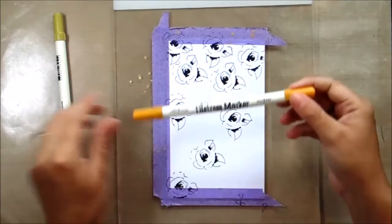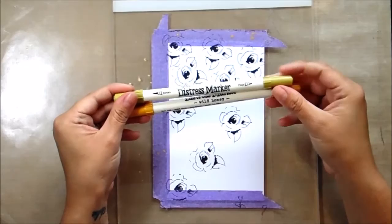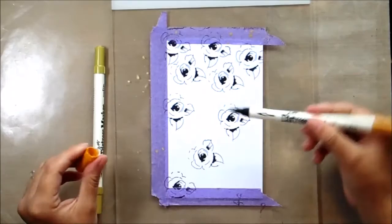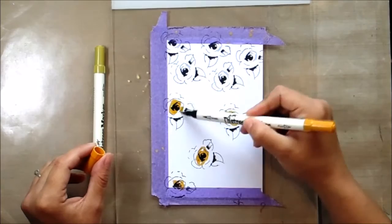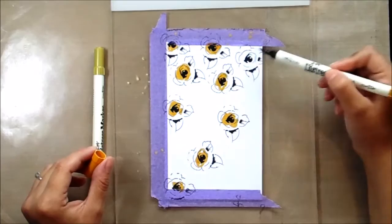Once you're happy with the stamping you've just done, I'm going to take some distress markers. I have two here. I have wild honey for the flowers and crushed olive for the leaves, and what I'm going to do is I'm going to take the brush tip and I'm just going to quickly add a scribble to the flowers. I'm just going to make sure I've got color on them.